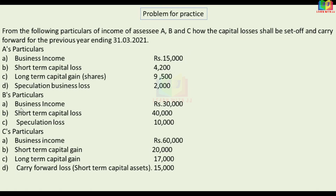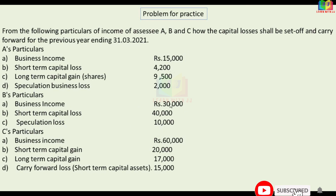For Assessee B in the practice problem: business income, short-term capital loss, and speculation loss. The short-term capital loss may be carried forward, and the speculation loss — since it cannot be adjusted against other income — is also carried forward separately.